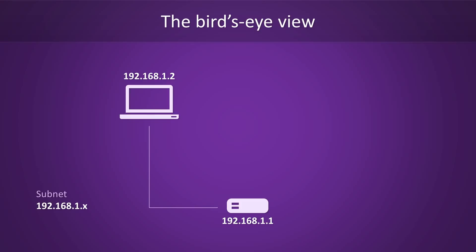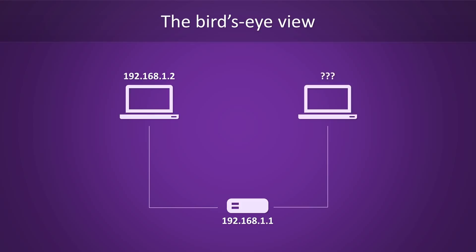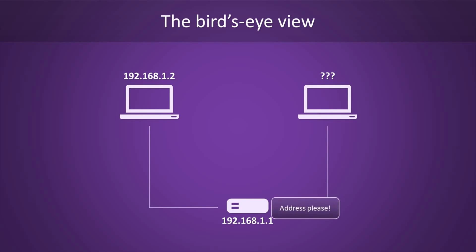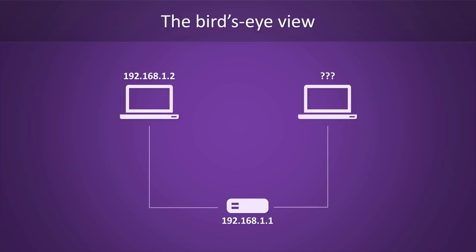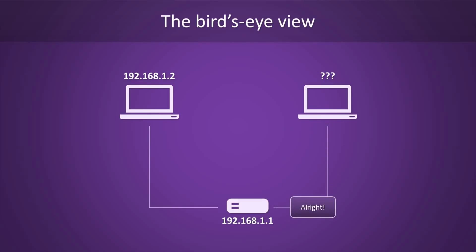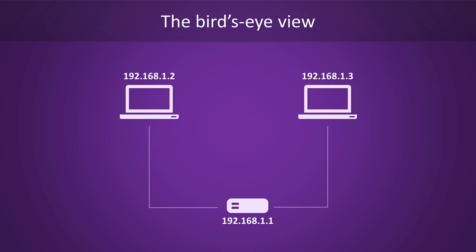Jumping back to the previous example, the second computer has just joined the network. At this point, it doesn't have an IP address, but it wants one. First, our new host will send a message asking for an IP address. The router will respond to this request with an offer. The new host will accept the offer, and finally the router will confirm that the IP address is now assigned to the host. From this point forward, it is known as 192.168.1.3.